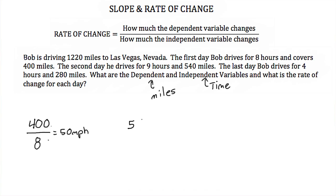Let's try the second day. He drives 540 miles, which again is our dependent variable and goes in the numerator. He does that in 9 hours, which is our independent variable and goes in the denominator. If we divide 540 by 9, we find out that Bob has been driving 60 miles per hour.